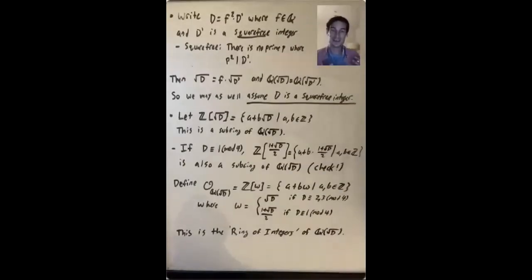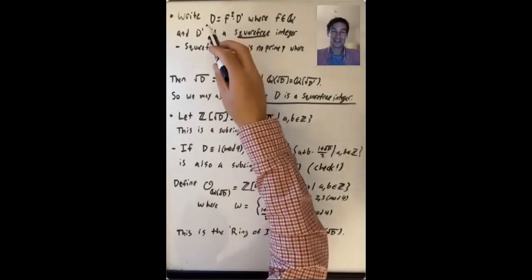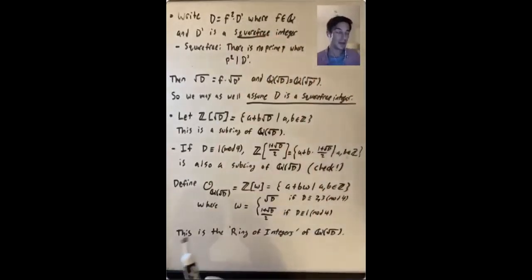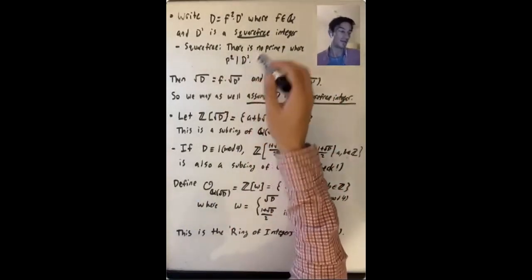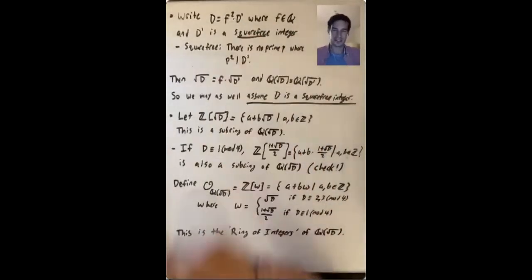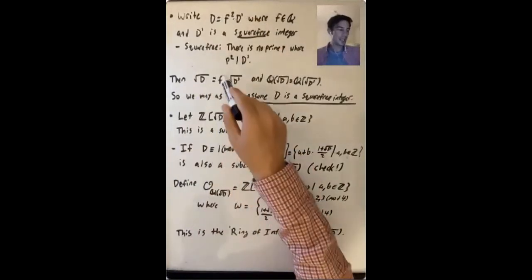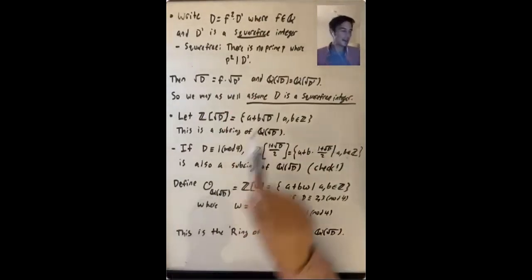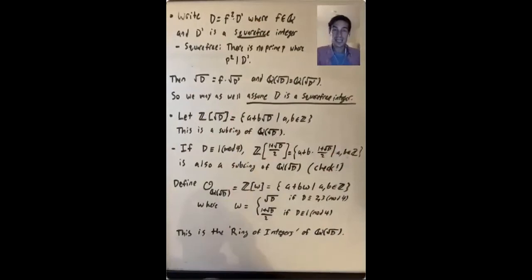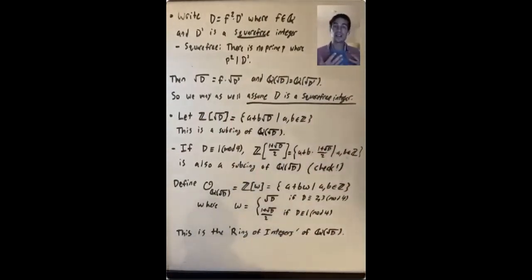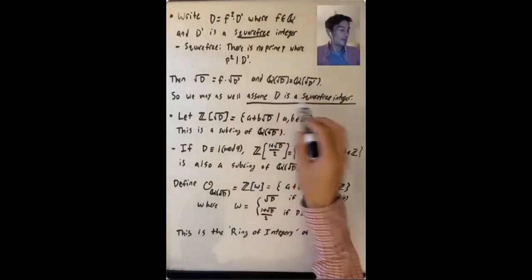Continuing with this setup, we can take our rational number D, which is not a square, and write it as F² times D′, where D′ is a square-free integer — meaning no prime P has its square dividing D′. When you take √D = √(F²D′) = F√D′, you can see that the set of all things writable as A + B√D is the same as A + B√D′. So if we want to understand all quadratic fields, we can restrict to D being a square-free integer.